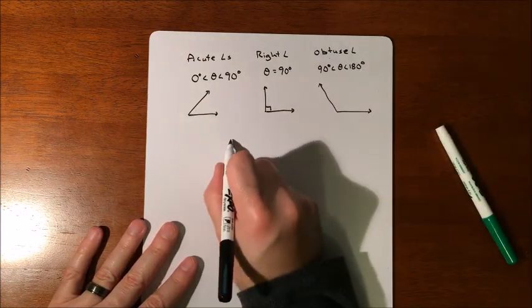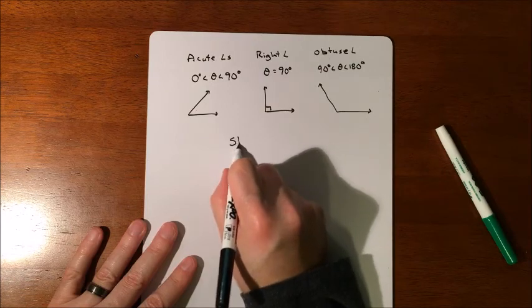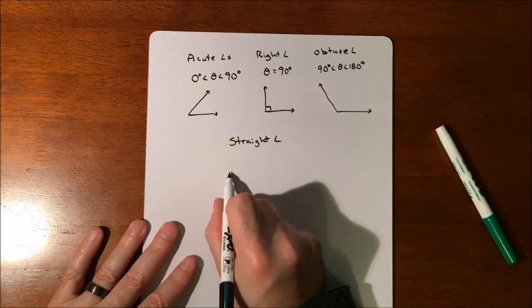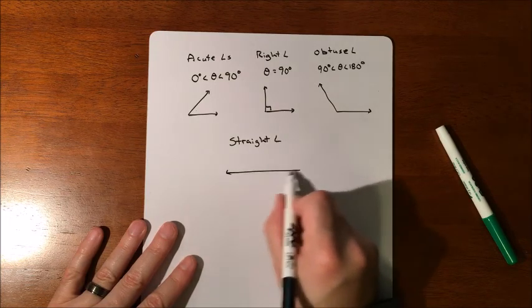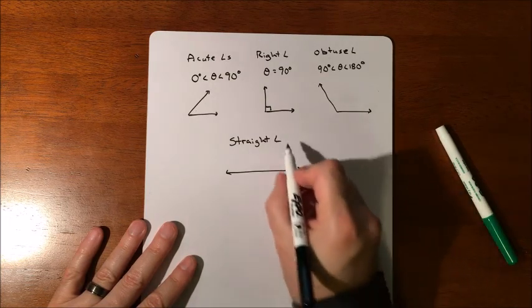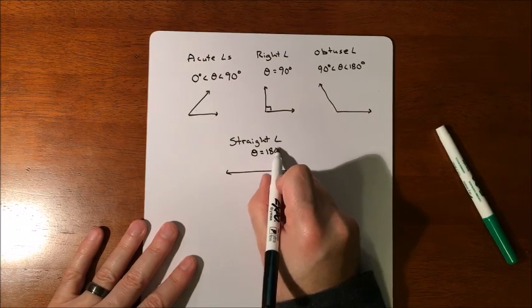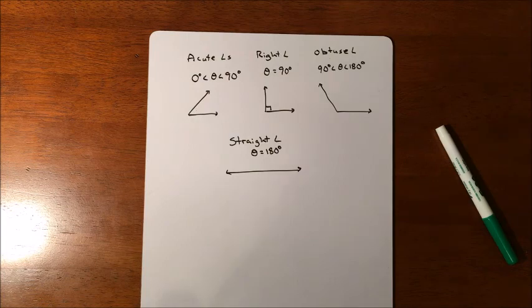Because when it actually equals 180, that is known as a straight angle. And that one's a straight angle because it makes a straight line. So that is when your theta and your angle equals 180 degrees.